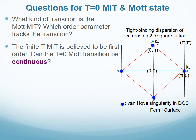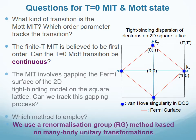Despite almost six decades of work, there are several questions that remain to be answered on this model. For instance, what is the nature of the zero-temperature transition and the order parameter that tracks it? The transition clearly involves the gapping of the Fermi surface of the tight-binding metal, shown in red in the figure. Can we track this transition? For this, we use a novel renormalization group method based on many-body unitary transformations.